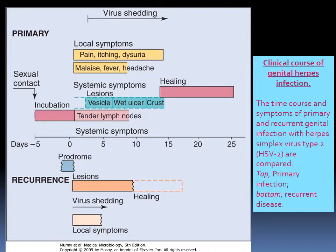In the primary infection there was no prodrome. In the secondary infection, you get a prodrome, and this time you get lesions and local symptoms at the same time because your system is already primed. You go through the complete cycle, and then there is healing. That is a typical pattern for genital herpes.